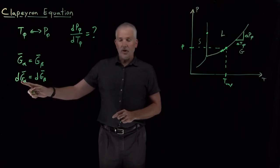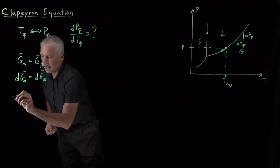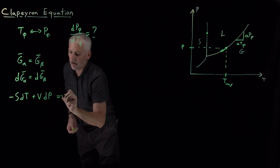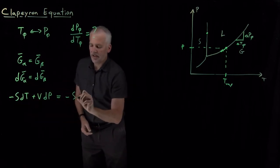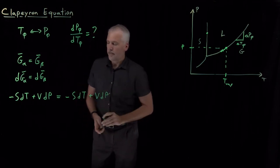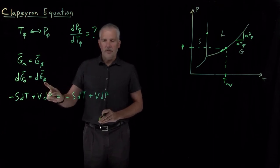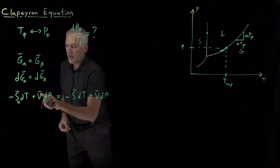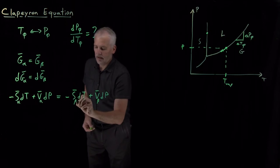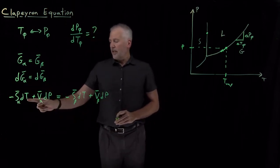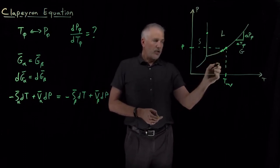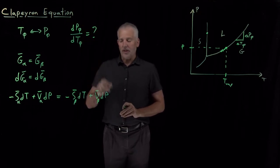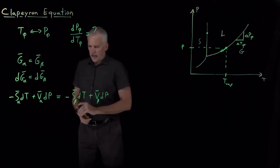We know something about the differential of the Gibbs free energy. The fundamental equation tells us that dG equals minus S dT plus V dP. So on the left side I have dG_alpha equals minus S_alpha dT plus V_alpha dP, and on the right side dG_beta equals minus S_beta dT plus V_beta dP. These are all molar entropies and molar volumes. I don't need subscripts on T and P because as I move along the coexistence curve, the temperature and pressure of the phase transition change simultaneously for both phases.